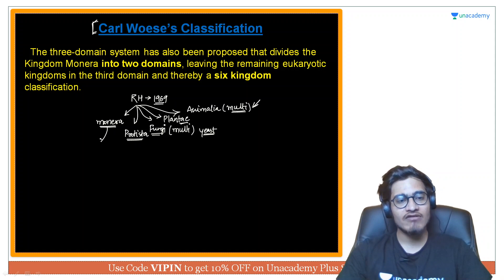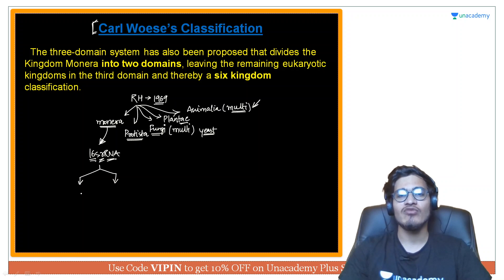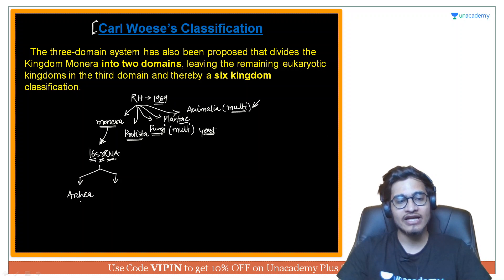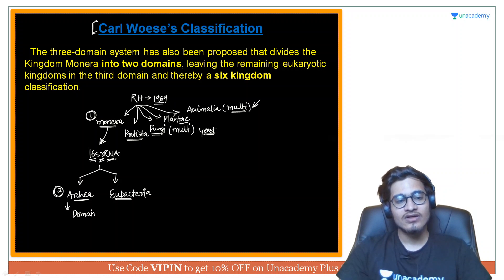Karl Woese took a very important criteria into consideration — that is 16S rRNA. The sequence of this ribosomal RNA was considered, and depending upon this particular sequence, he classified Monera into two different domains. The first was Archaea, jisko aap log Archaebacteria bolte thay, and the second one was Eubacteria. So aap yeh jo Monera tha, which was a single kingdom, now it got converted into two kingdoms — domain Archaea and domain Eubacteria.